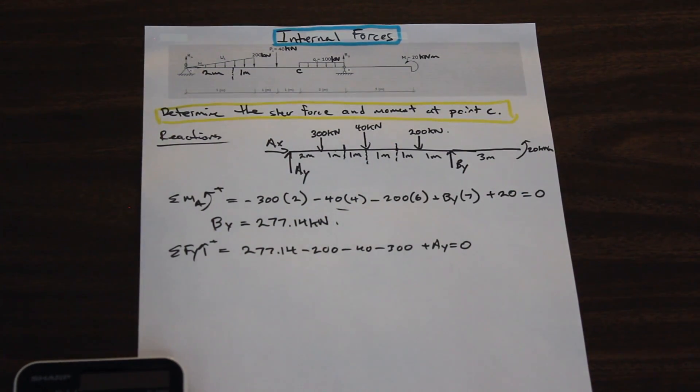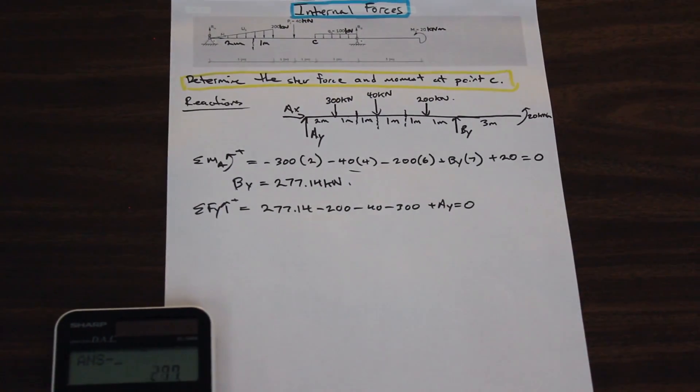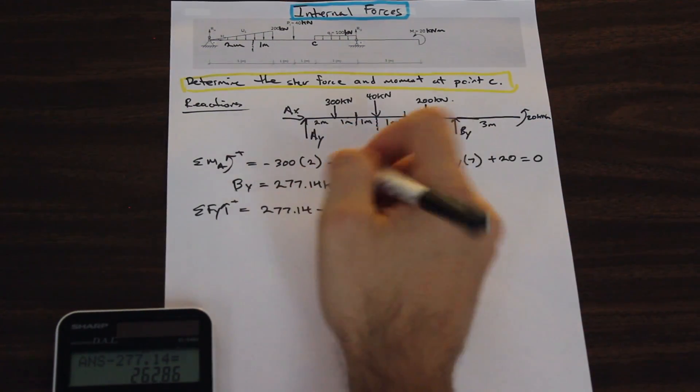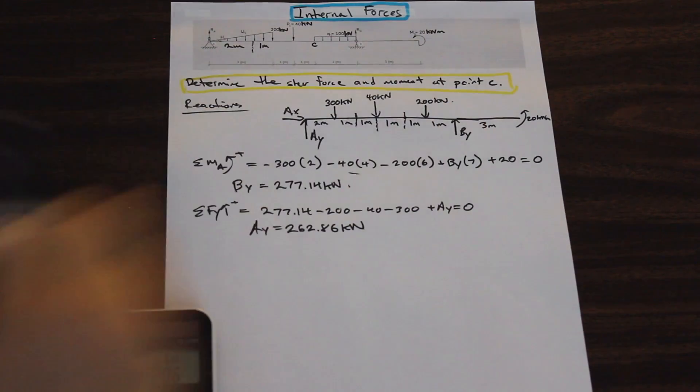If we calculate that, we have 300 plus 40 plus 200 minus 277.14. That's going to give us 262.86. Cool. Pretty easy, right?